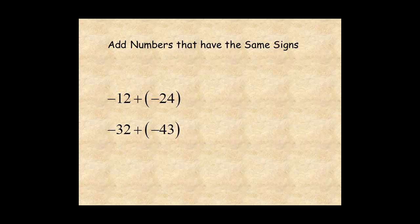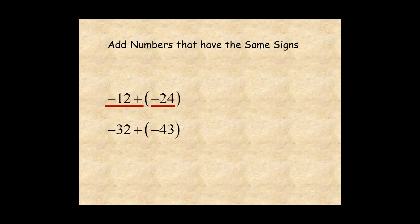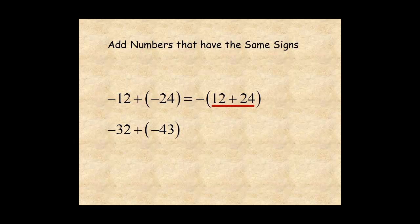Here are two more examples to help you understand this rule. To add negative 12 plus negative 24, find the sum of the absolute values of the two numbers, 12 plus 24. The sign of the sum is negative because the sign of the two numbers is negative. The answer is negative 36.